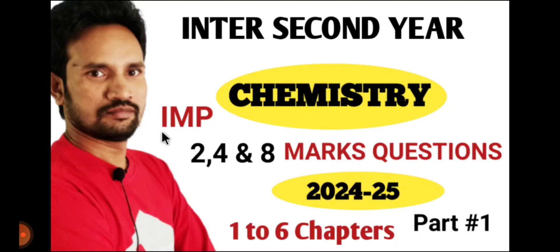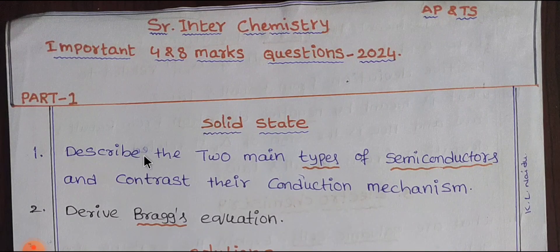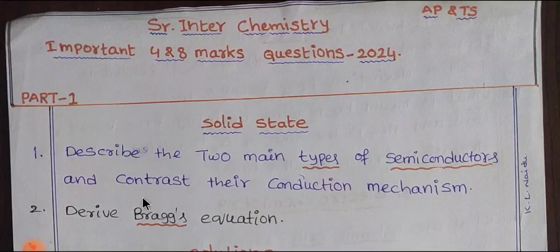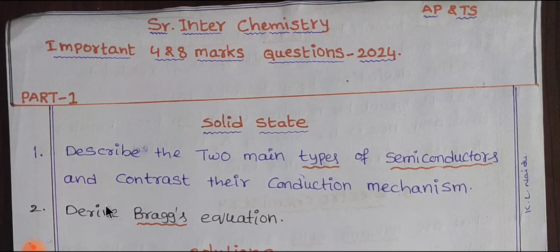In this video we will cover conductors and Bragg's equation. Bragg's equation is a topic with a high chance — about 80% — of appearing in the exam. If you have this short code, you will get two marks in this video. You will see two marks at the end.